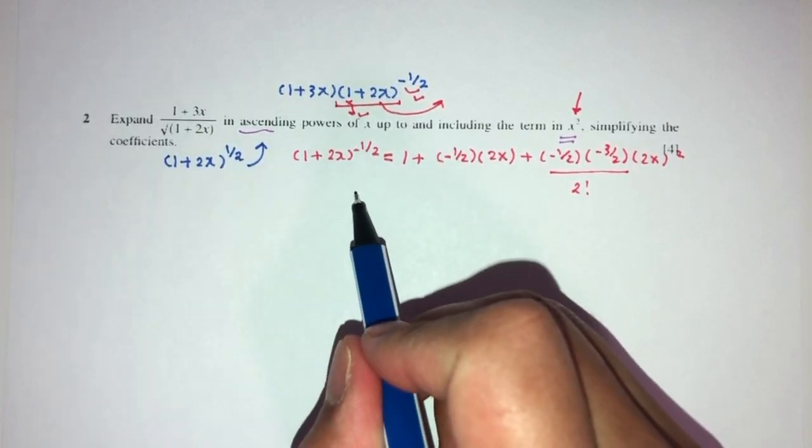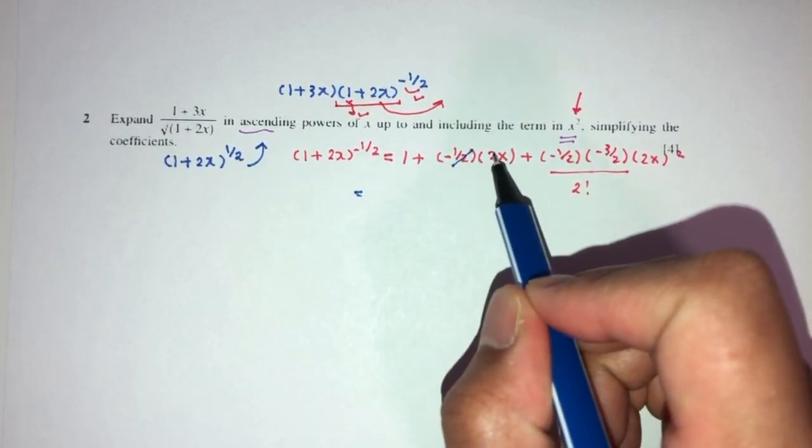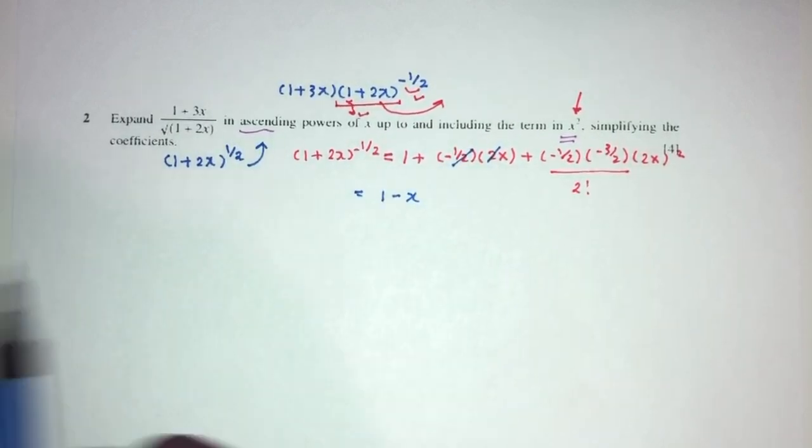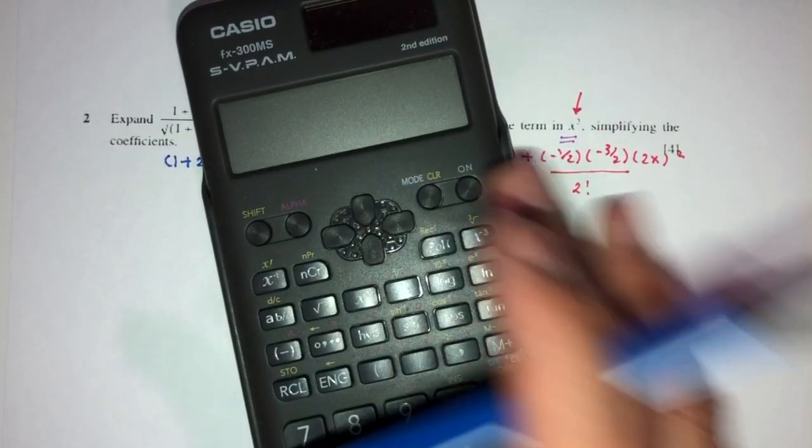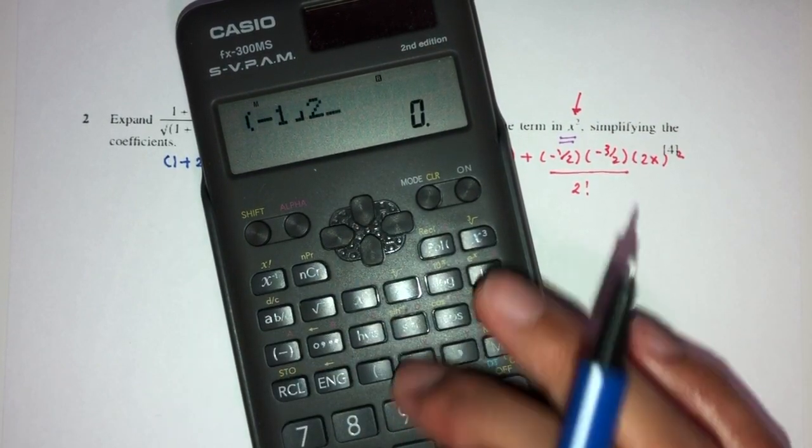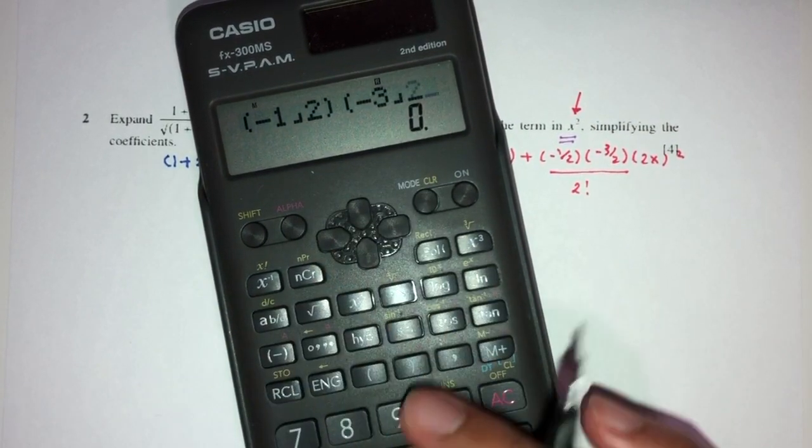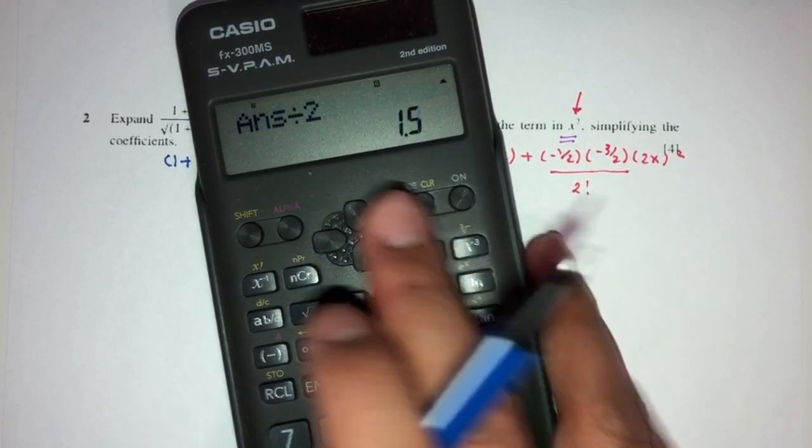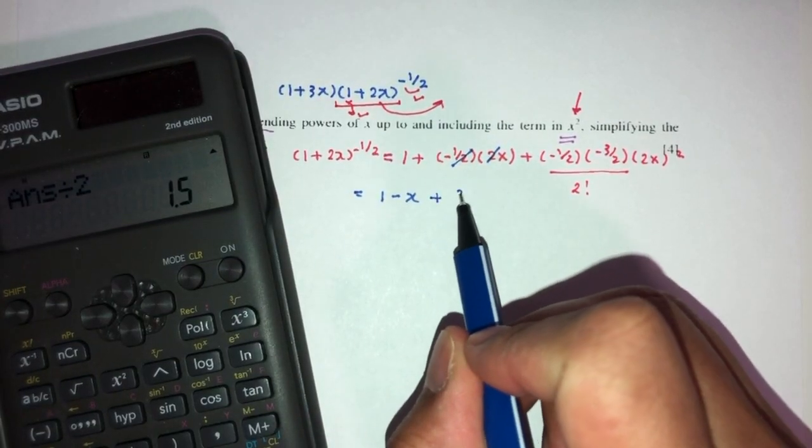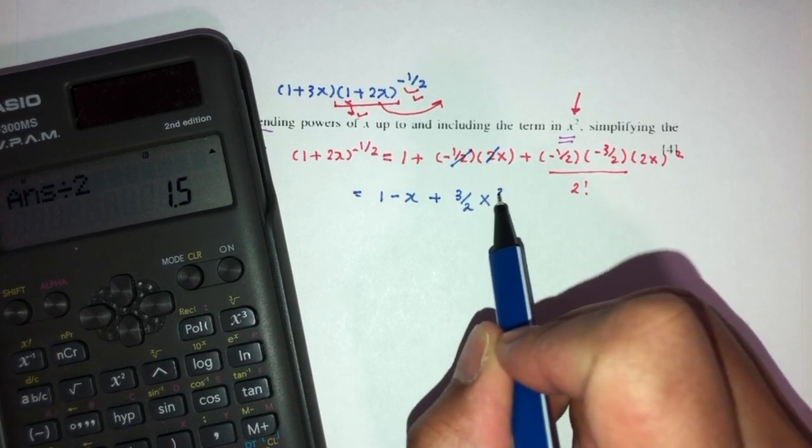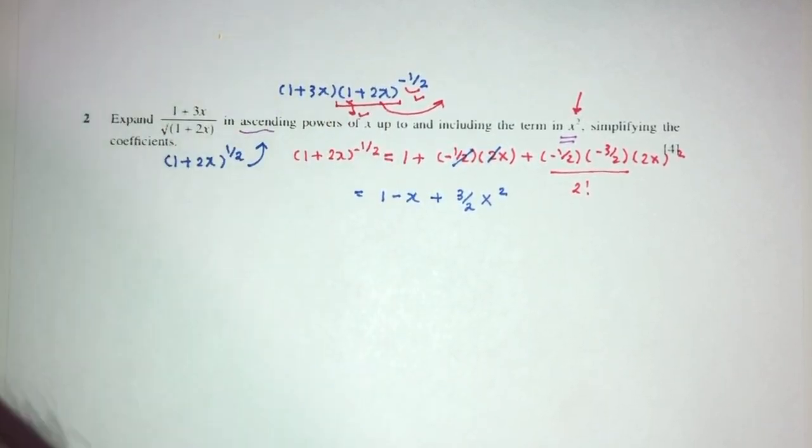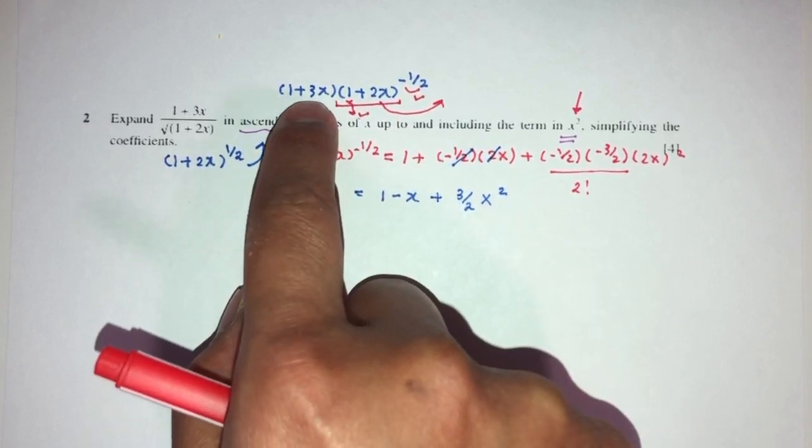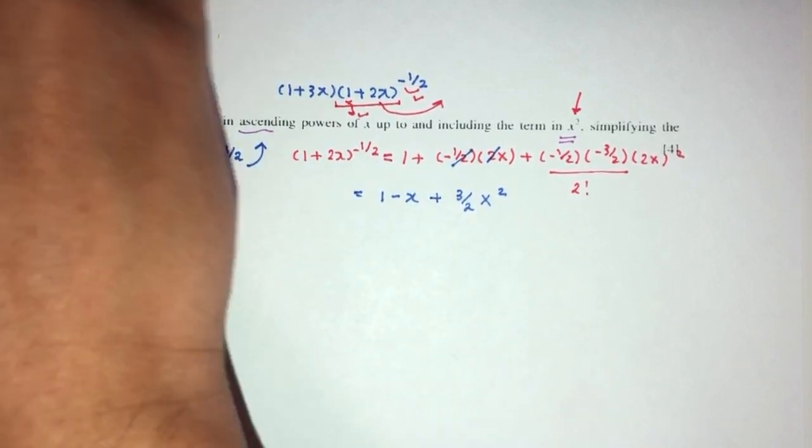Now, you will have what? This will be cancel out. You will have 1 minus x. Now, here we have to use our calculator because why not? Minus half times minus 3 over 2 times 4 divided by 2. That should be plus 3 over 2 x squared. Okay? Now, this is only the expansion of this one, but don't forget about this one, because it is also included in your question.